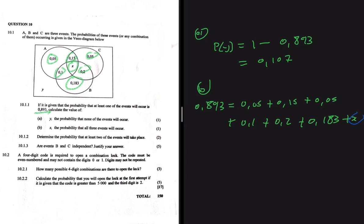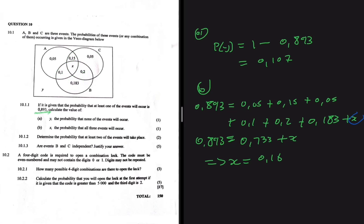Adding all the known probabilities gives 0.733 plus X. So X equals 0.893 minus 0.733, which equals 0.16. We now know that X equals 0.16 at the center of the Venn diagram where all three events overlap.